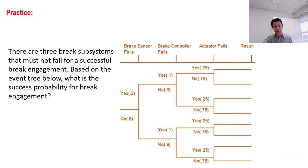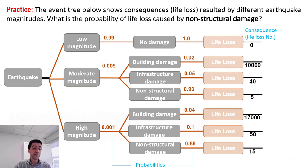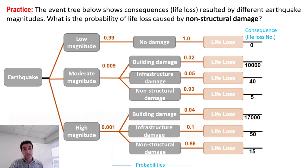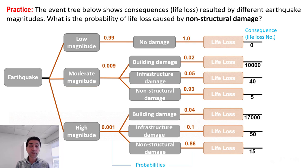You can pause the video and calculate this for yourself. In the next example, an earthquake is the initial event. There are three possibilities: low magnitude with a 99% chance, moderate magnitude with a 0.9% chance, and high magnitude with a 0.1% chance. The next intermediate events include no damage for low magnitude, and for moderate and high magnitude there are three possibilities each with associated probabilities. Life loss chances are specified on the right-hand side of the diagram.